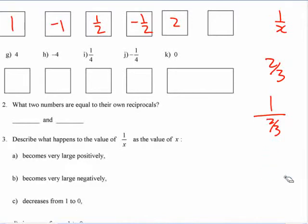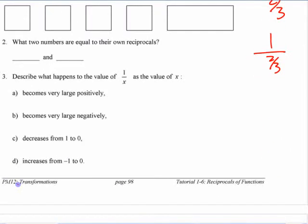Now, this is what we're thinking about down in the bottom here. Describe what happens to the value of 1 over x as the value of x. So, as the value of x becomes large positively. So, let's make a number line here and think about this.